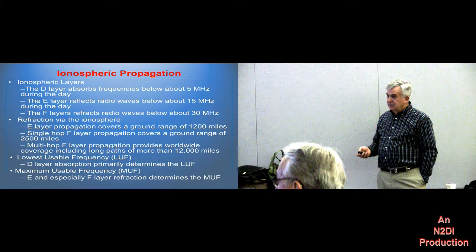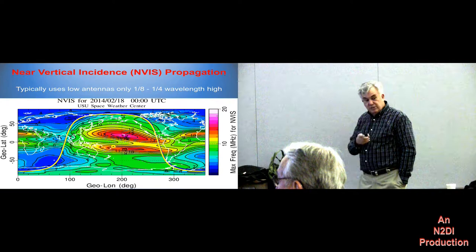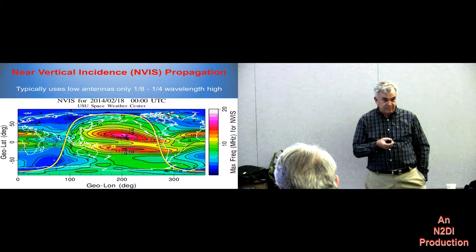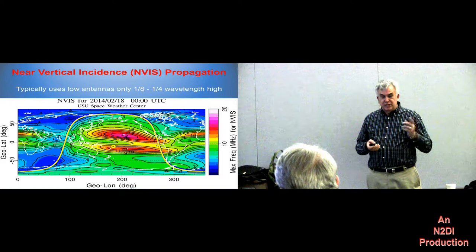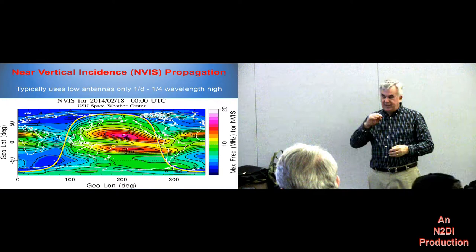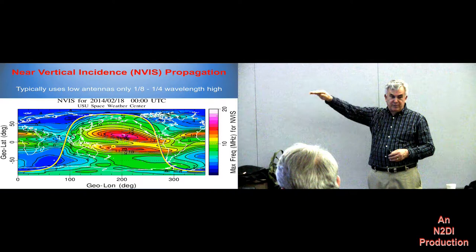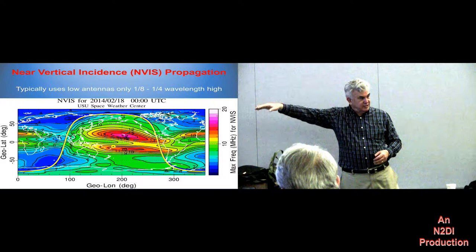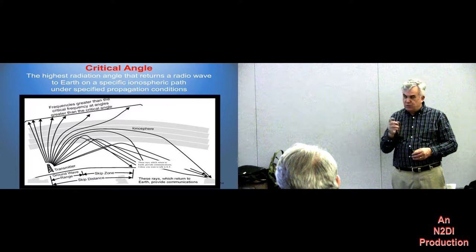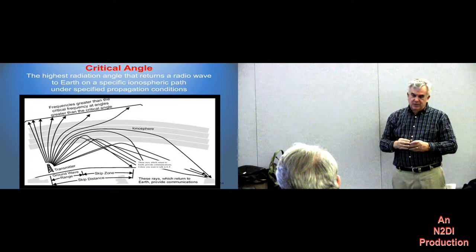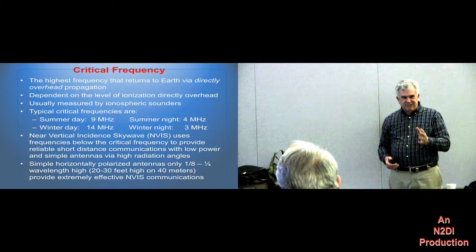What about NVIS? NVIS is a different kind of propagation we use on field day all the time — anyone using 40 meters on field day is likely using NVIS. NVIS relies on propagation that goes up essentially vertical. For DX chasers, we're interested in low-angle propagation that gets out to the refracting layer 250 miles high. But for NVIS, we want very reliable local communications, so we want signals to go overhead rather than way out to the horizon. What we care about is a concept called critical frequency.